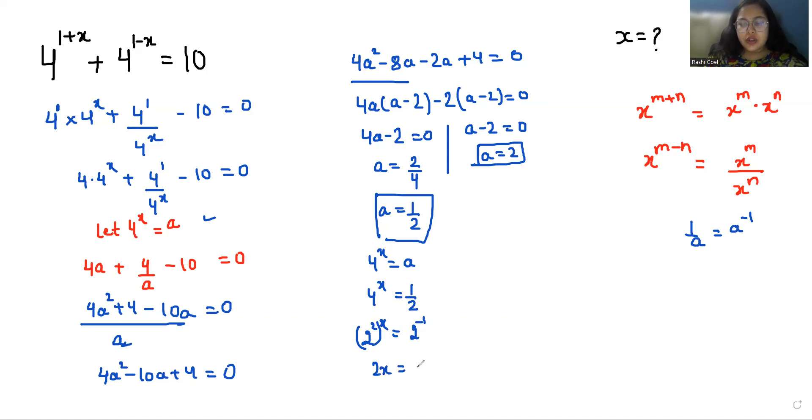So 2x equals -1. If the bases are equal, their powers are also equal. So the value of x is -1/2.